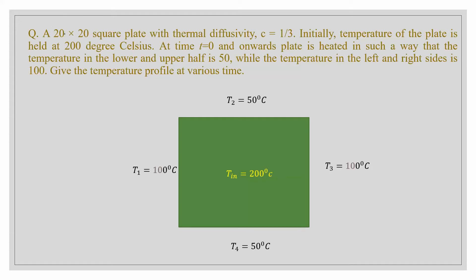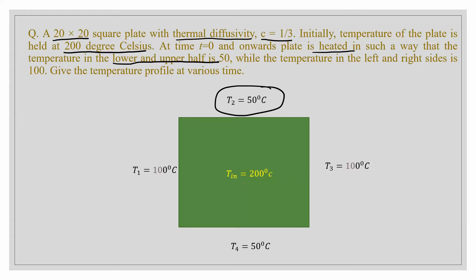Suppose there is a plate with dimensions 20×20 square meters. The material from which the plate is made has a thermal diffusivity of 1/3. Initially, the temperature of the plate was held at 200 degrees Celsius. After time t=0, the plate is heated such that the temperature at the lower and upper boundaries is 50 degrees Celsius.